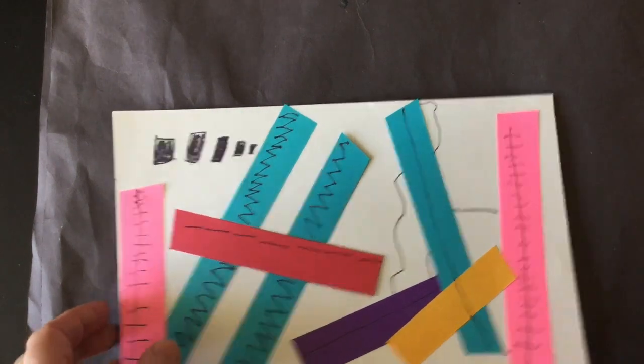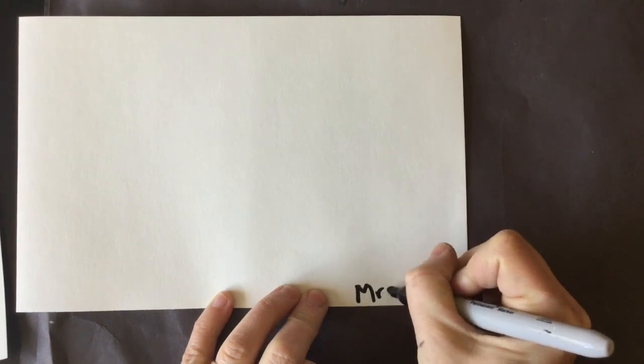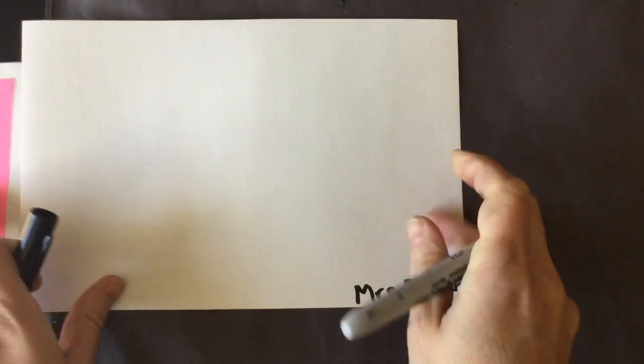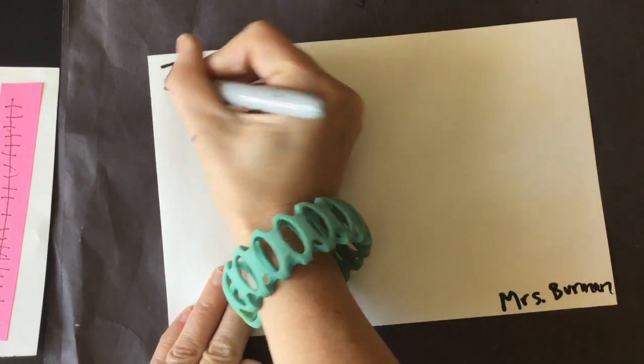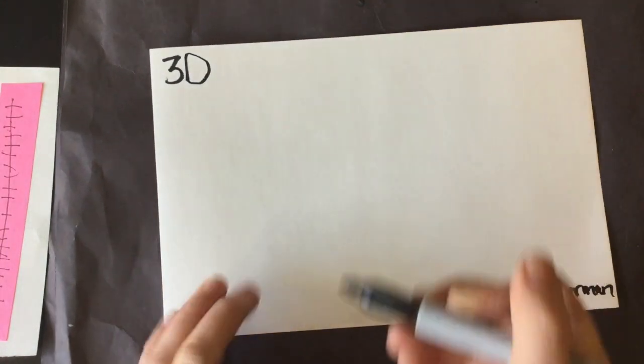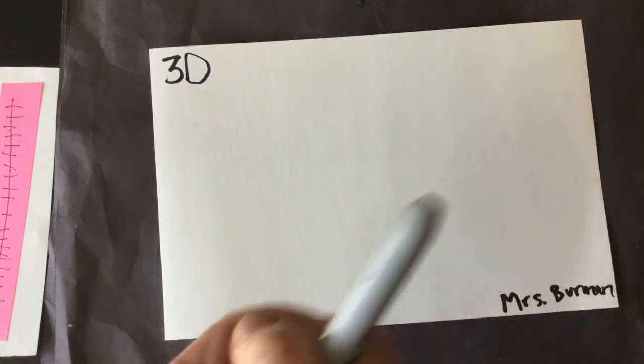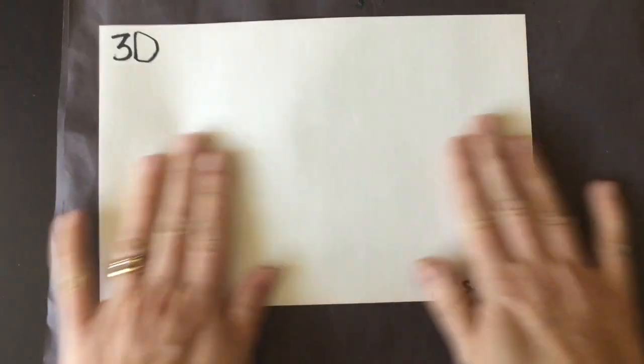This week we are going to make an artwork that is three-dimensional. So I've got a new piece of paper. I'm going to write my name and you might want to write 3D up at the top. So we're gonna make an artwork that comes out from our paper to make it three-dimensional.